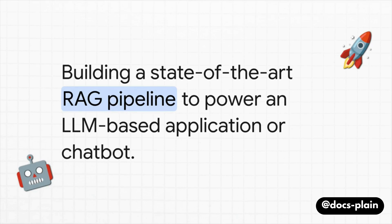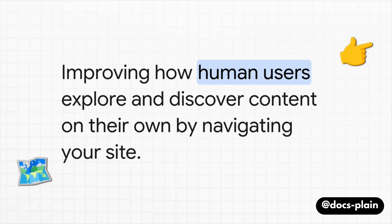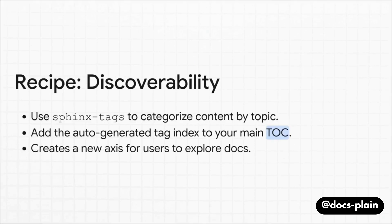Now for our main focus: let's say you want to build a cutting-edge RAG pipeline to power a chatbot or some other cool AI feature. The recipe is simple — the LLMS.txt generator is absolutely non-negotiable. That's what gives the AI the clean full-text content it needs to actually learn. As an optional but very powerful add-on, you can also use your meta-description to give a clean one-sentence summary for each document, which can be super useful for AI. But what if your main goal isn't to build for search at all — what if you just want to improve how your human users explore and find content by navigating through your site? In that case, Sphinx Tags is your hero. Use it to tag all your content by topic, and then — this is the really crucial part — add that auto-generated tag index page right into your main table of contents. This gives your users a completely new way to slice, dice, and explore your documentation.